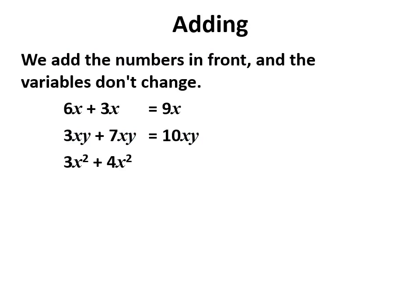Last one, x squareds are the same. 3 and 4 is 7 and the x squared doesn't change. Really important to never change the type of unknown when adding or subtracting.